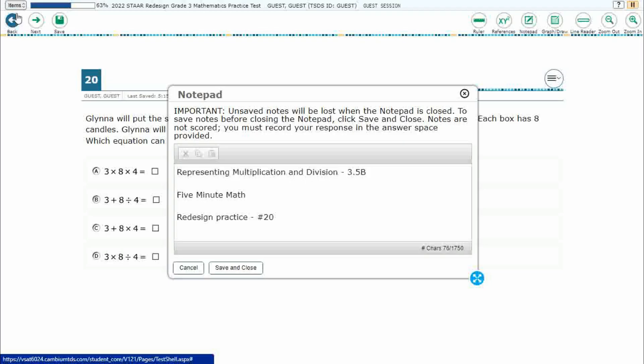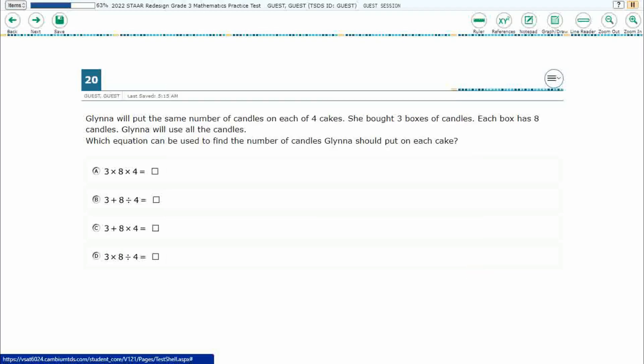This is standard 3.5b in the great state of Texas and we are using item number 20 of the redesigned practice online star test.